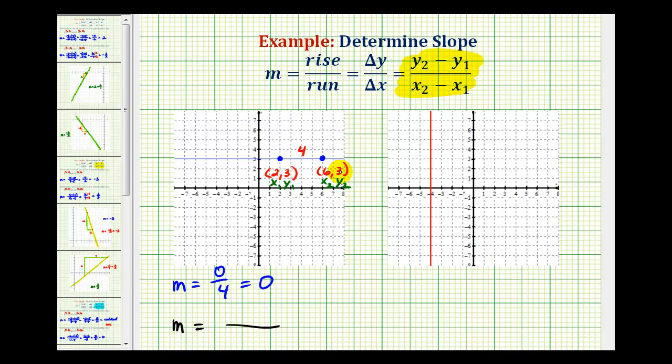We would have y sub 2 minus y sub 1, that would be 3 minus 3, over x sub 2 minus x sub 1, that's 6 minus 2. Well, this would still be 0 over 4, 0 divided by 4, which is still 0. So any horizontal line is going to have a slope of 0.